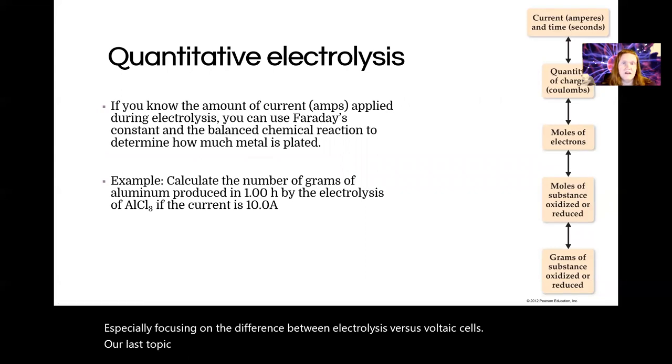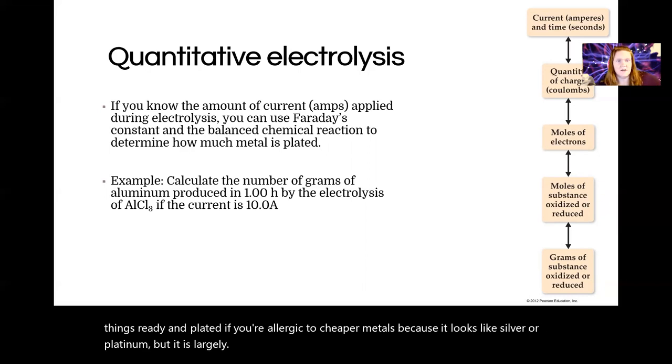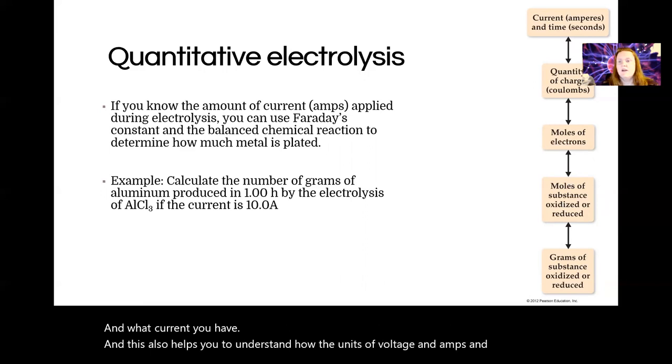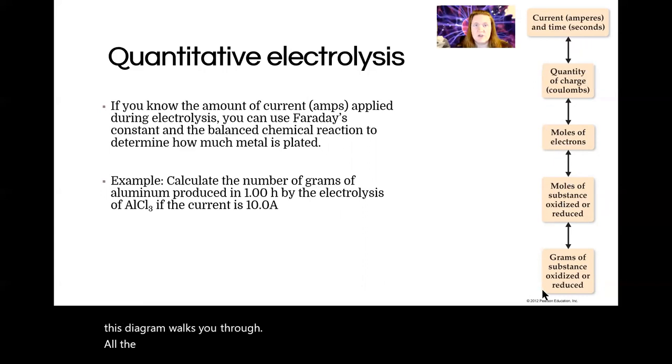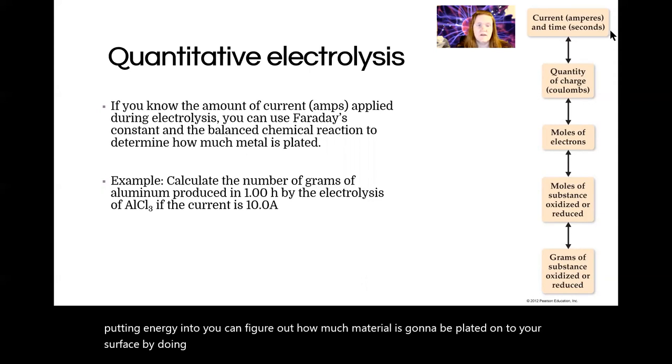Okay. Our last topic is quantifying electrolysis. So this applies to a lot of areas, especially things like chrome plating something, or if you have ever bought something jewelry, especially that was like silver plated or rhodium plated. You get things rhodium plated if you're allergic to cheaper metals, because it looks like silver or platinum, but it is largely hypoallergenic. So anyway, you can quantify based on how much time has passed and what current you have. And this also helps you to understand how the units of voltage and amps and stuff work. But this diagram walks you through all the different quantification you can do for non-spontaneous reactions. So reactions we're putting energy into. You can figure out how much material is going to be plated onto your surface by doing this.